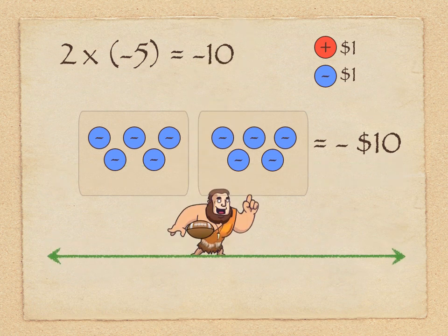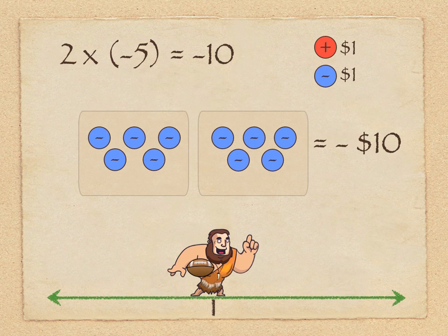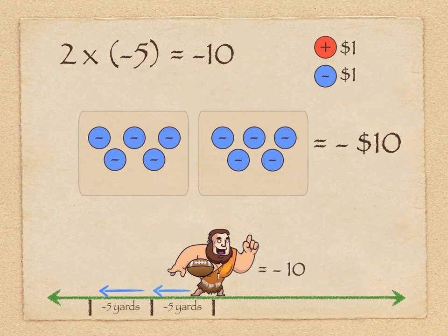Spend your money wisely. Anyway, we can look at this on a football field as well. So, if our caveman is positioned right there and the referee perhaps assesses him two penalties, both 5 yards for offside, he would reduce his field position or back up in the field by 10 yards, so negative 10 yards.